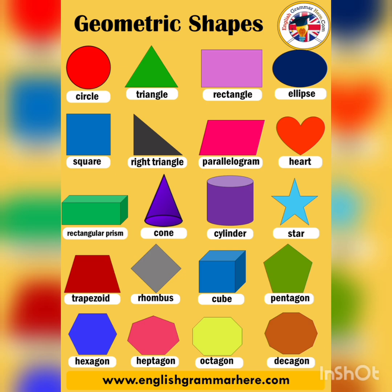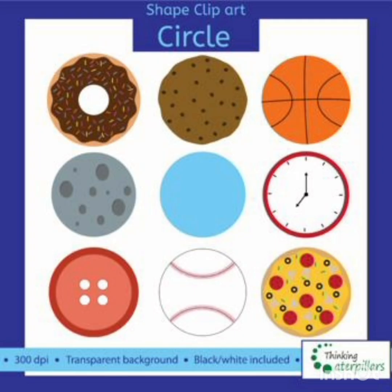Circle. Circle is round in shape. No sides, no corner. Example: bangle, mama made chapati and dosa. Dosa is in round shape, correct, right?